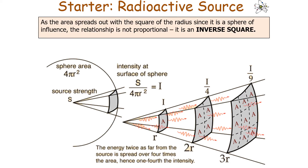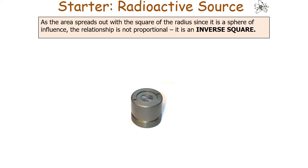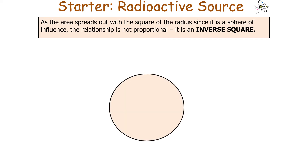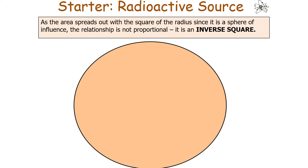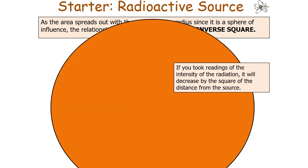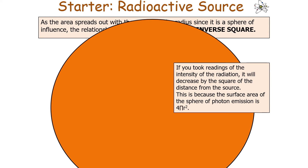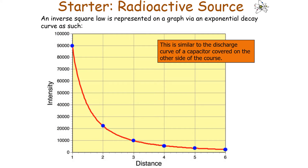As the area spreads out with the square of the radius — since radiation is emitted in a sphere-like pattern — the relationship is not a proportional one, rather it's an inverse square. A gamma source emits photons in every single direction, forming a sphere of photons around it. The further away you get from the source, the larger the sphere becomes, so photons spread out more. Readings of intensity will decrease by the square of the distance, because the surface area of the sphere of photon emission is 4πr², so intensity goes down by a factor of r².